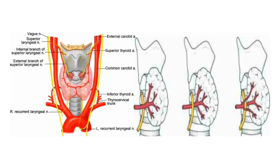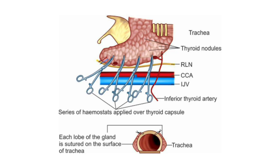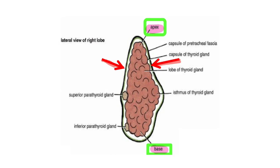In surgery, all variations in the relation of the recurrent laryngeal nerve with the terminal branches of the inferior thyroid artery are checked. After identifying the recurrent laryngeal nerve, branches from the inferior thyroid artery nearer to the lobe are ligated, making sure to maintain the blood supply of the parathyroid glands.